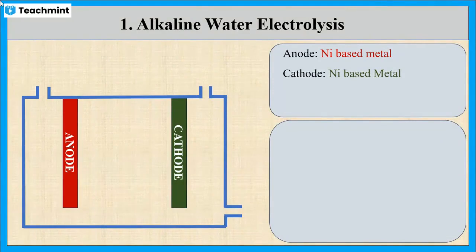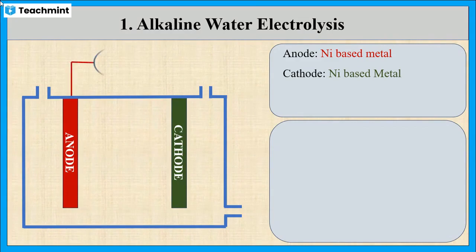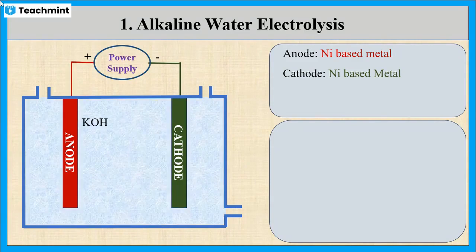Nickel is preferred for the electrodes because it is more stable than platinum during the oxygen evolution. These two electrodes are connected to the power supply, and the electrolyzer is filled with